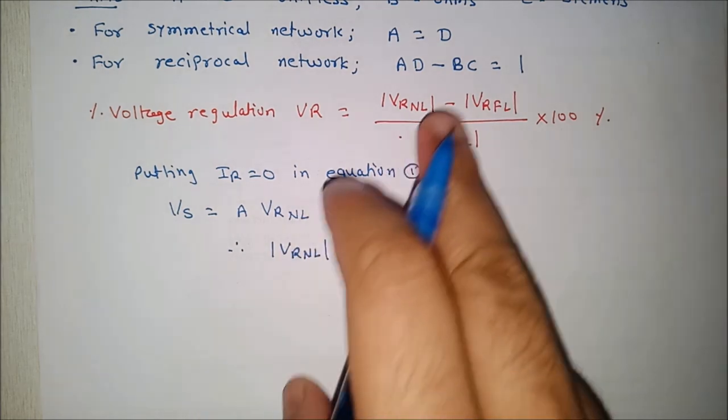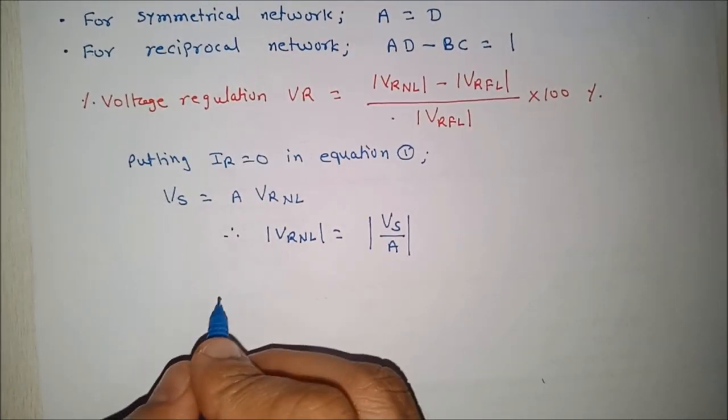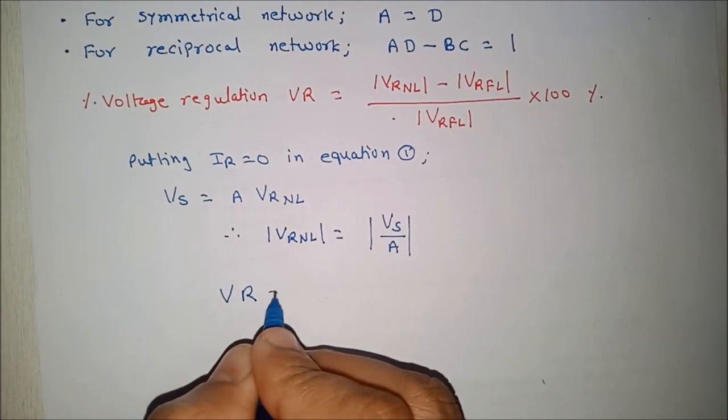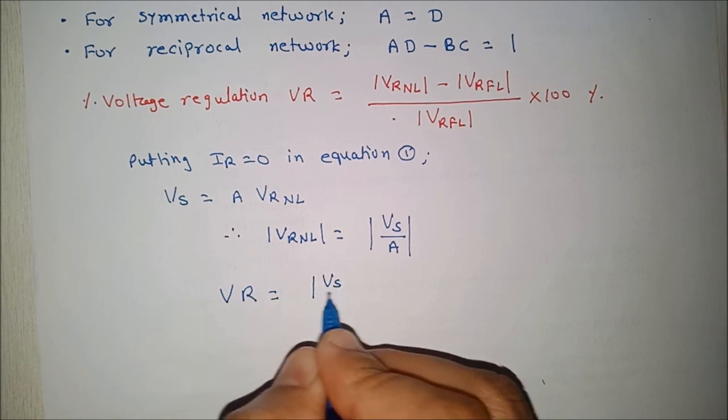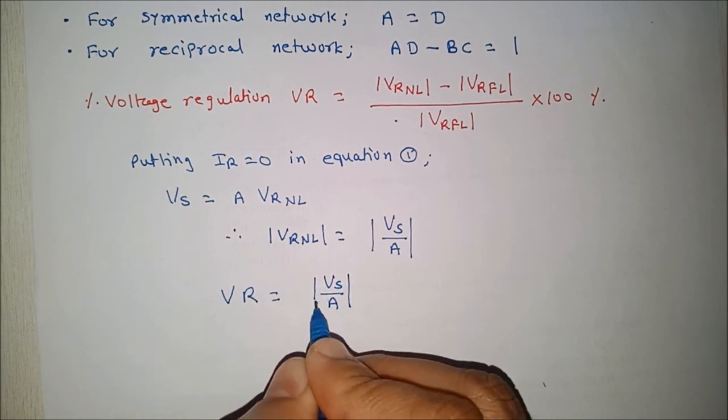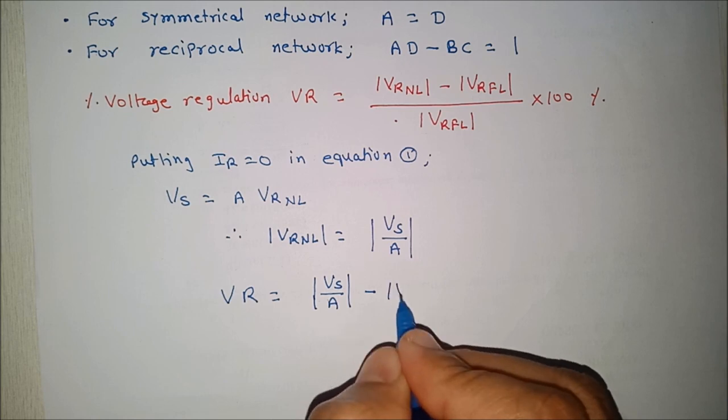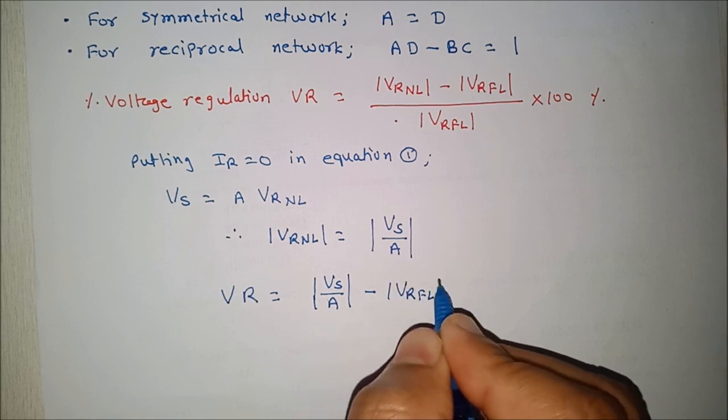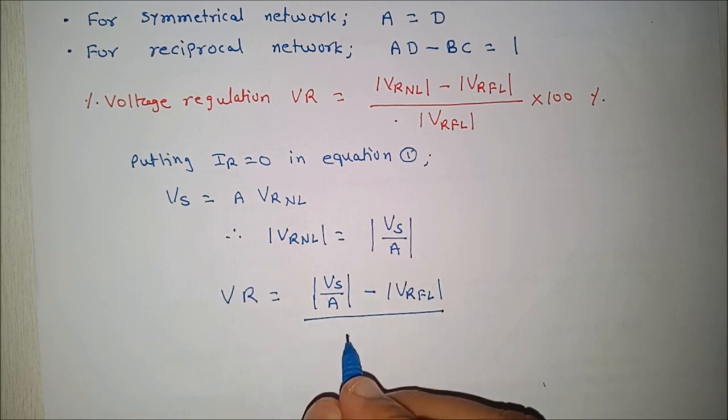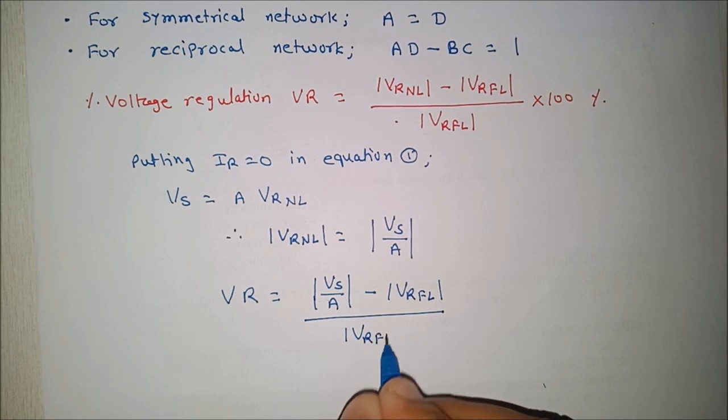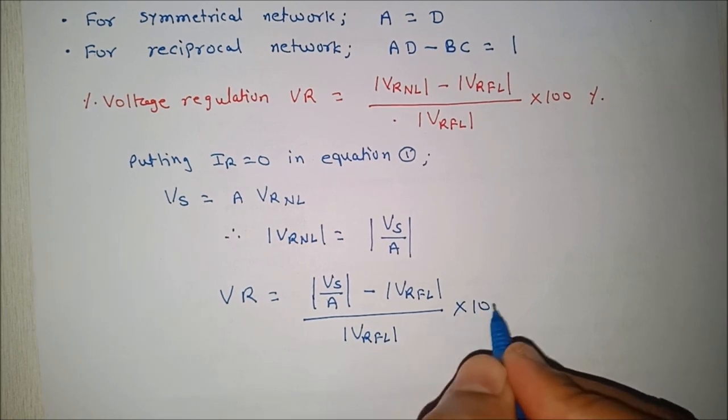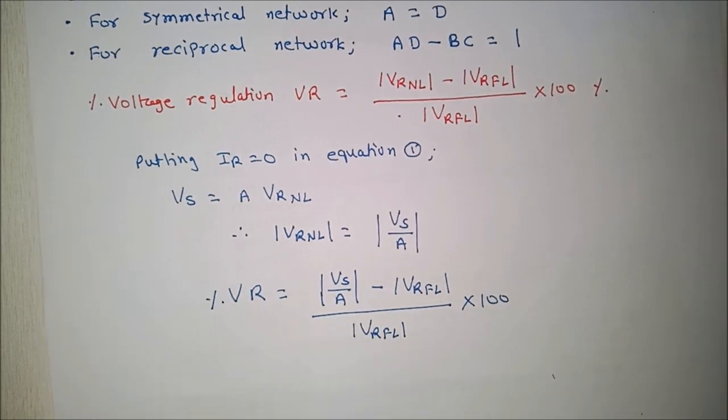Now put this value in original equation of voltage regulation. So, we can write voltage regulation as Vs divided by A minus Vr full load divided by Vr full load into 100. So, this will give us percentage voltage regulation.